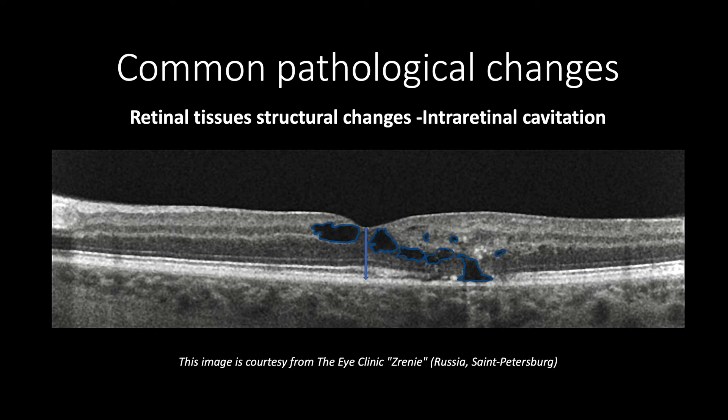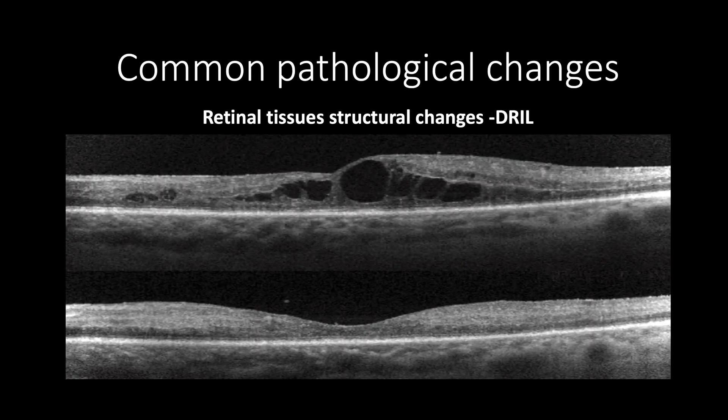One of the biomarkers of inner retinal tissue changes which affect visual acuity is the disorganization of inner retinal layers, which features a loss of boundaries between the inner retinal layers such as the outer plexiform layer with inner nuclear layer, inner plexiform layer, and ganglion cell layer.